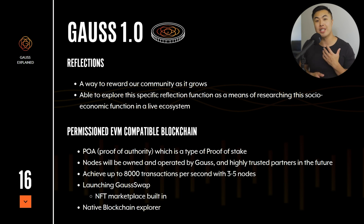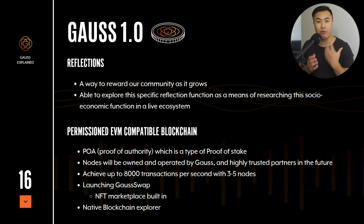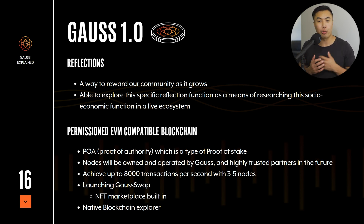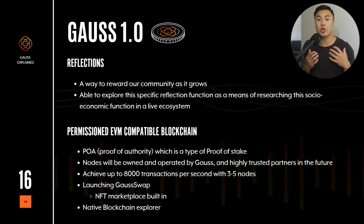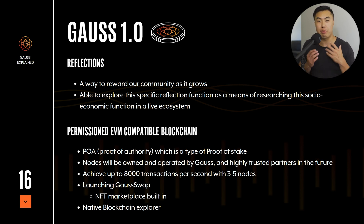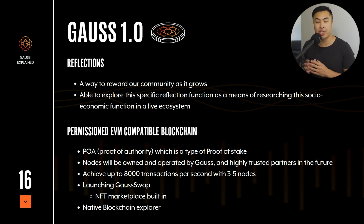There are actually going to be two different phases of Goss. Goss 1.0 will be launching in Q4 of 2022, and in Goss 1.0 there's going to be reflections — a way to reward the community as it grows. By holding the GANG token, you can actually earn a portion of the tax fees incorporated into the ecosystem. Using the reflection system is a means of research, and there's going to be a paper released on that research later down the road. The Goss 1.0 blockchain is going to be a permissioned EVM blockchain, compatible with different EVM blockchains such as Polygon and Ethereum, meaning we can interact with other blockchains pretty seamlessly.